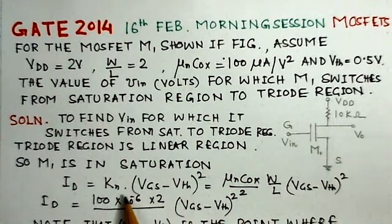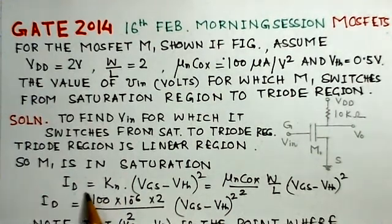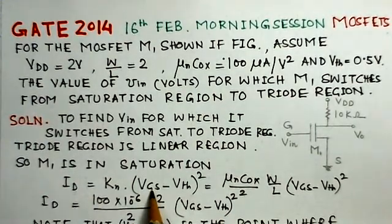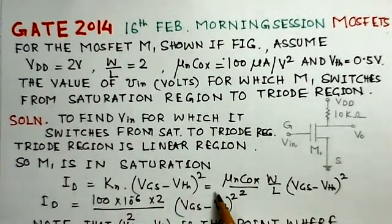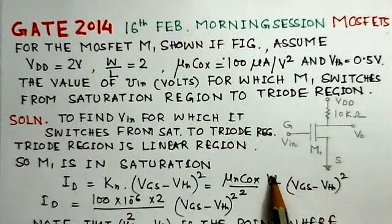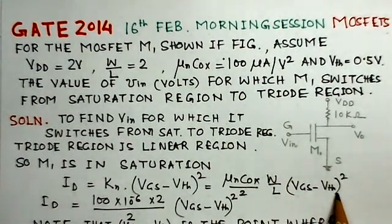It is given that M1 is in saturation. The corresponding current for M1 is ID equals KL times VGS minus V threshold whole squared. KL is a constant. This constant is mu N cox over 2 W by L times VGS minus V threshold.